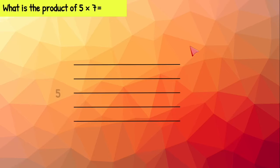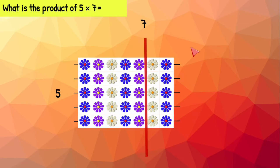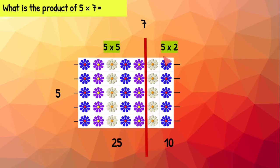Five times seven means we need five rows with seven flowers on each row. We're going to chop our array. Now we have two smaller arrays. Our first array has five rows with five flowers on each row. Five times five equals 25. On the other array we have five rows with two flowers on each side. Five times two equals 10. Let's go ahead and put 25 and 10 together. We know that equals 35. So five times seven equals 35.